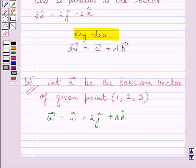We are also given that the line is parallel to 3i plus 2j minus 2k.